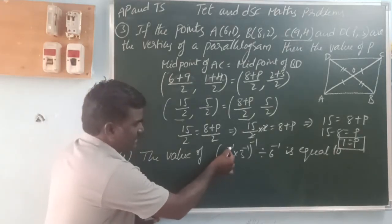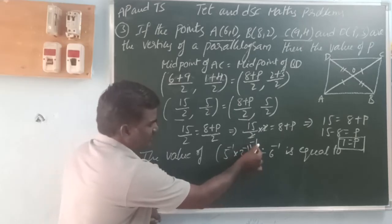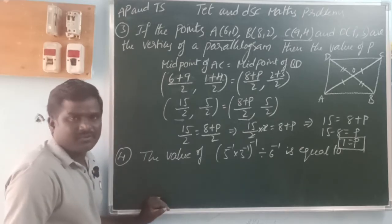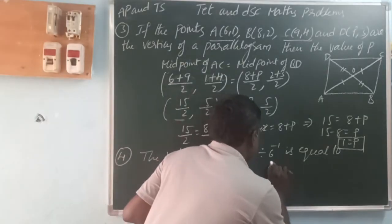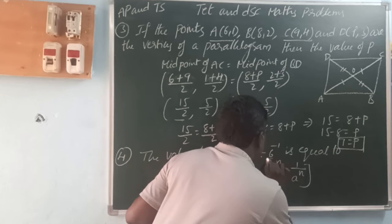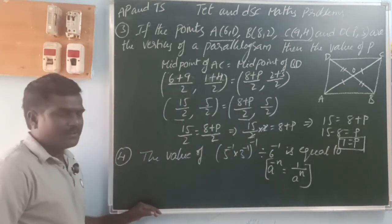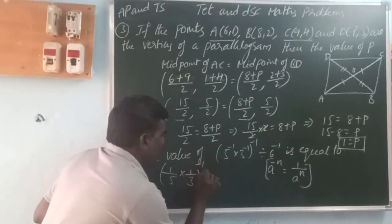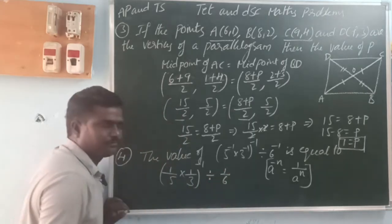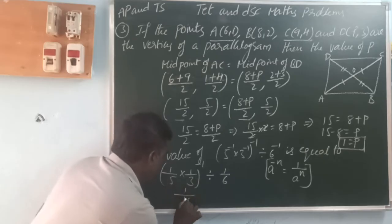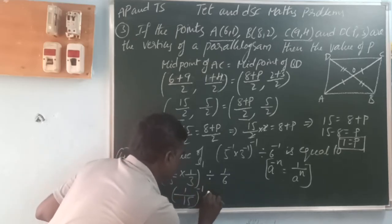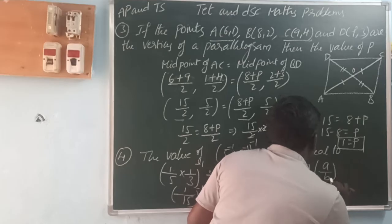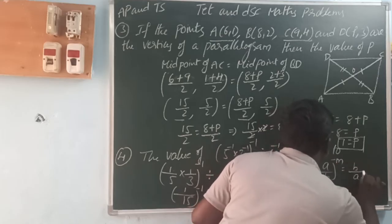Next: find the value of (5 power minus 1 into 3 power minus 1) whole power minus 1 divided by 6 power minus 1. Here 5 power minus 1 is 1 by 5, and 3 power minus 1 is 1 by 3. So we have (1 by 5 into 1 by 3) whole power minus 1 divided by 1 by 6, which is (1 by 15) whole power minus 1 divided by 1 by 6. Using the rule: (A by B) whole power minus M equals (B by A) whole power M.